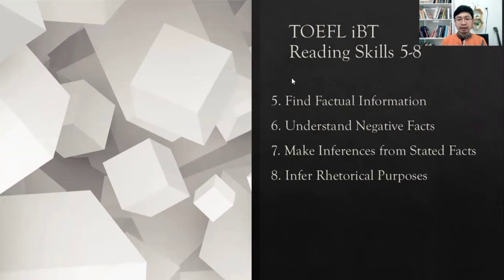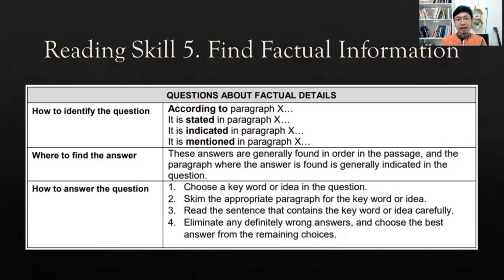Now let's focus on reading skill five and reading skill six: finding factual information and understanding negative facts. For reading skill five, finding factual information, you're going to find typical questions that include phrases like 'according to paragraph X,' 'it is stated in paragraph X,' 'it is indicated in paragraph X,' or 'it is mentioned in paragraph X.' Those are examples of questions in finding factual information in TOEFL iBT.